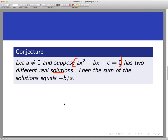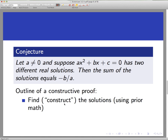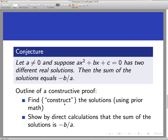So the constructive approach to proving this theorem would be to say, first, let's go get the solutions. Let's find what those solutions are and have them concretely in front of us, and then simply add them together and show that once I take these two solutions and add them together, they equal what the conjecture says they equal. So that's the constructive proof.